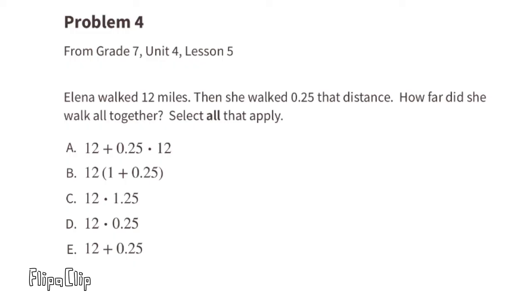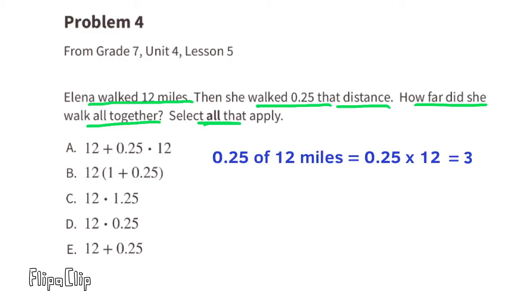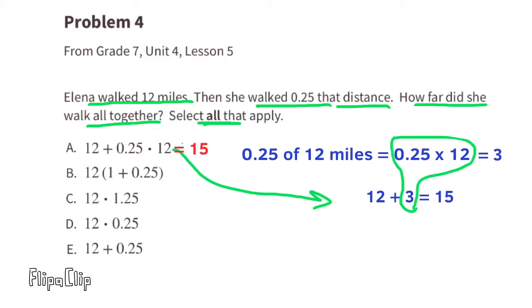Problem number four from seventh grade, Unit 4, Lesson 5. Elena walked 12 miles, then she walked a quarter of that distance. How far did she walk all together? Select all that apply. I know that a quarter of 12 is 3, or 12 divided by 4 equals 3. I can also multiply 0.25 times 12, and that also gives me 3. Since Elena walked 12 miles then she walked a quarter of that distance, that's 12 miles plus 3 miles, which is 15 miles. I can select any of the expressions that equal 15.